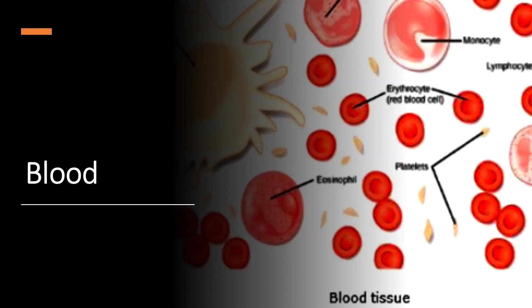Second, blood transports hormones throughout your body. Your endocrine glands, such as your pituitary and adrenals, secrete hormones into your bloodstream — kind of like emails — which carry them to the body's organs. These chemical messengers regulate many of the body's functions. Third, as we digest food, the small intestines absorb nutrients into your blood — molecules like glucose, amino acids, vitamins, minerals, and fatty acids that help your body's cells survive and carry out their functions. Good nutrition does a body good.